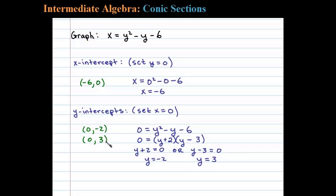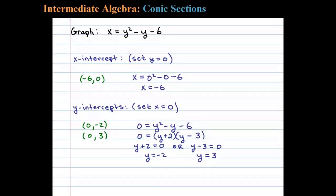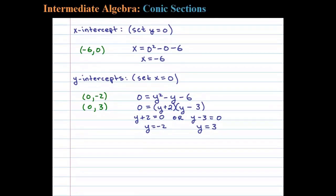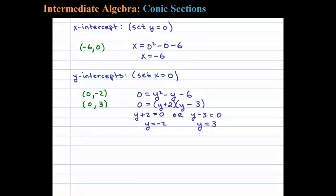Now finally we want to find the vertex, and to do that here we will use vertex form. Recall vertex form is x equals a times the quantity y minus k squared plus h. If we can write the original equation in that form, then the vertex will simply be h comma k.